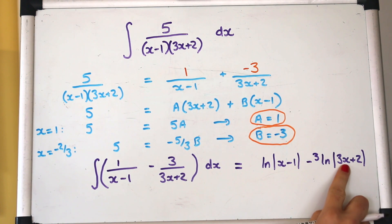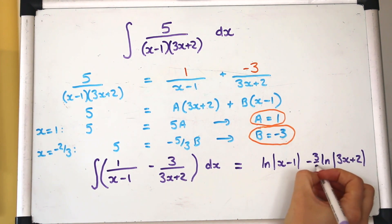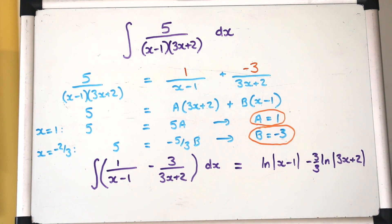But using the reverse chain rule on this we would need to divide by the derivative of this function so we'd need to divide by 3. So actually that 3 divided by 3 at the front will just vanish, it cancels out.